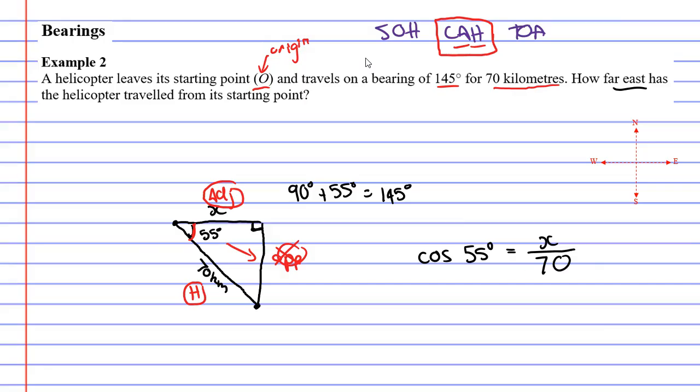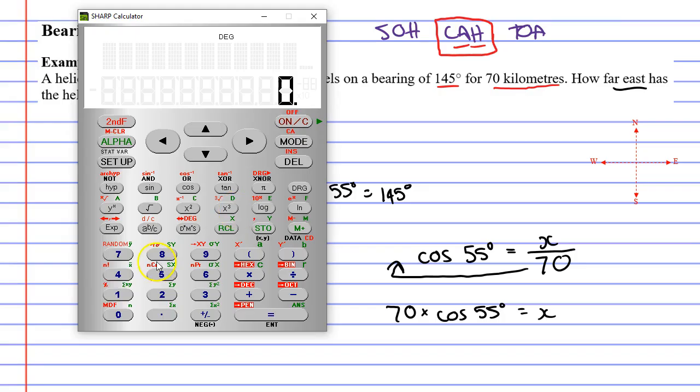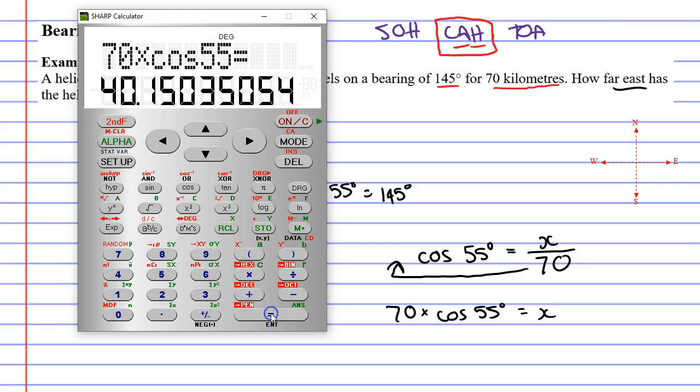Now if you have a number at the bottom you do what's called a slide. You slide the 70 to the front giving us 70 times COS of 55 degrees equals x. Now all we need is our calculator. 70 times COS of 55 degrees equals and we get 40.15.